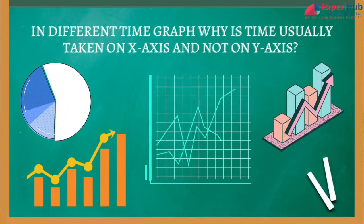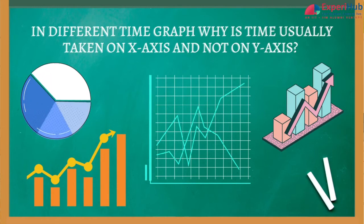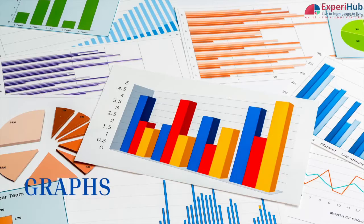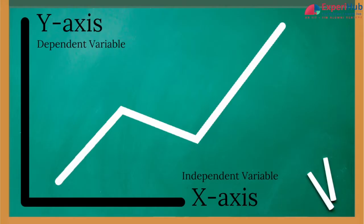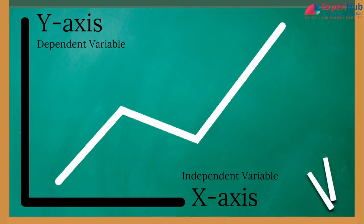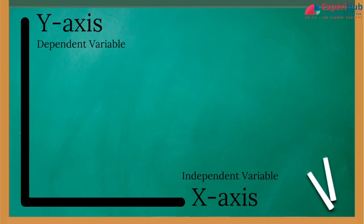In a distance-time graph, why is time usually taken on the x-axis and not on the y-axis? Graphs are meant to show the relation between variables, and normally the dependent variable is on the y-axis and the independent variable is on the x-axis.